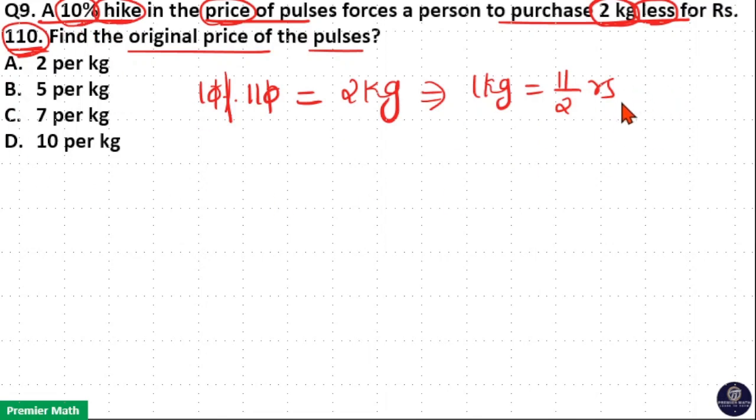Which means 110% is 11 by 2 rupees. Now if 110% is 11 by 2 rupees, then we need to find out the original price which is 100%.